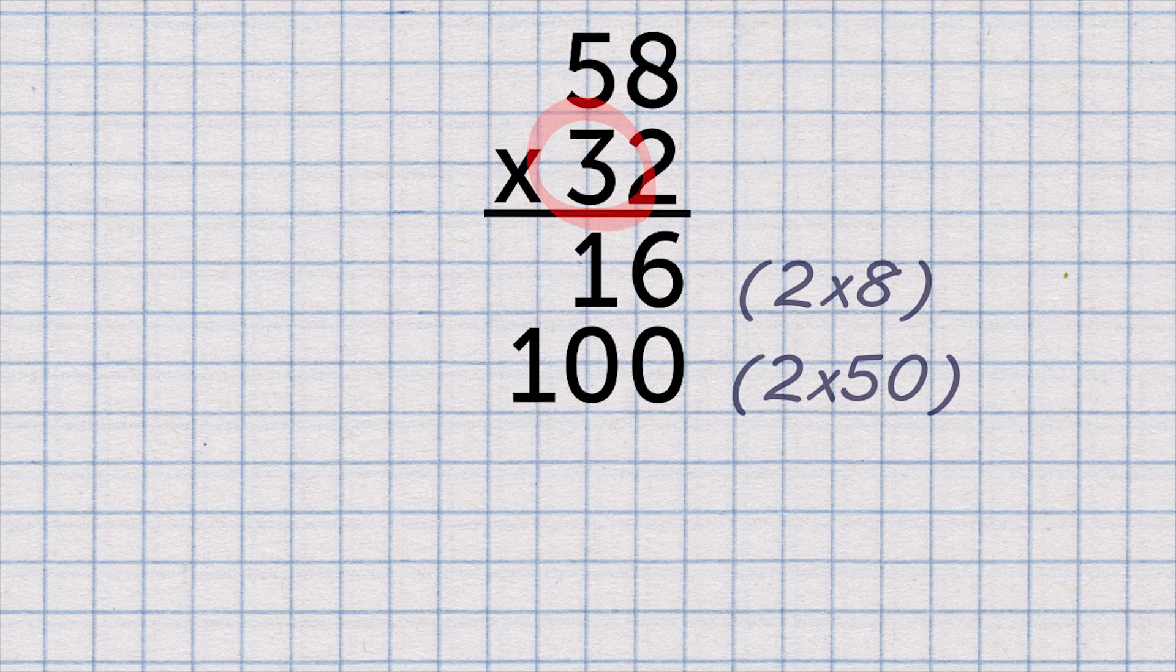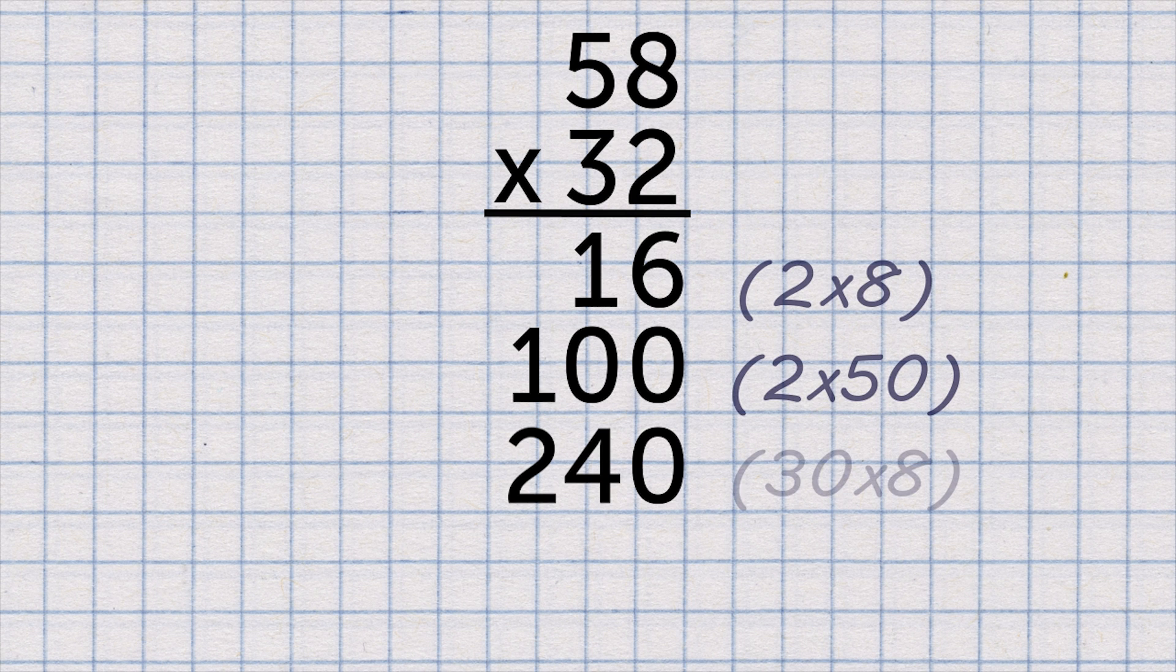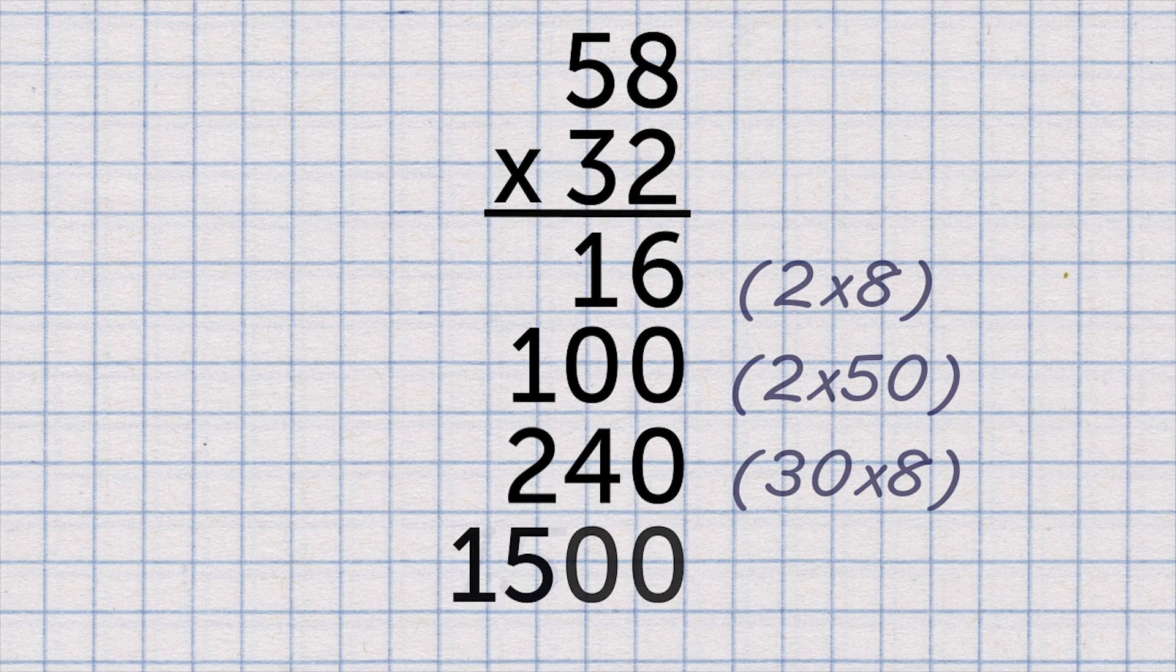Now 30 multiplied by 8. 3 times 8 is 24. So 30 times 8 is 10 times more than that. 240. Finally, 30 times 50. 3 times 5 is 15. So 30 times 50 is 100 times more than that. 1,500.